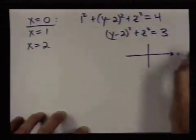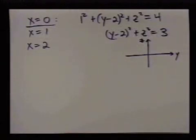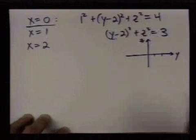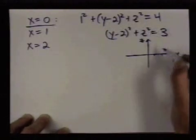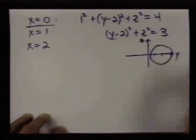So if I draw the yz plane, this is a circle with center 2 comma 0 and radius square root of 3. So something like that.